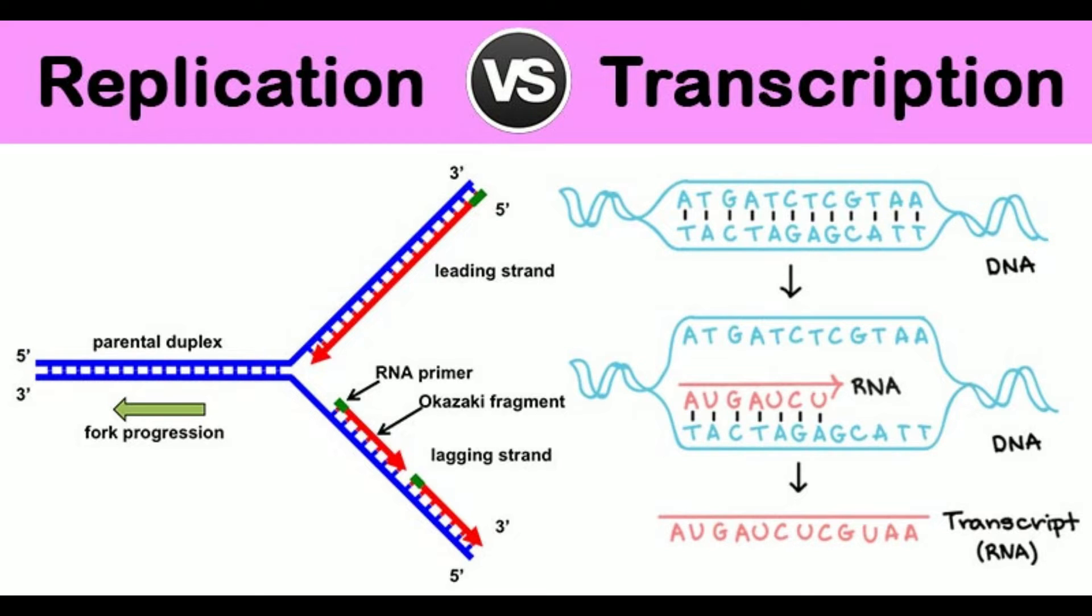3. Transfer of genetic information: from DNA to DNA versus from DNA to RNA. 4. Cell cycle timing: Replication occurs during S phase of cell cycle. Transcription occurs in the G1 and G2 phases of cell cycle.